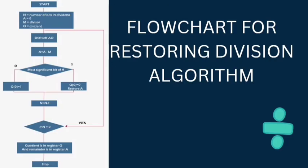My name is Manas, I am from batch S7 and my roll number is 38, and I am going to explain the flowchart of the restoring division algorithm. We assign the accumulator A with 0, we assign M with the divisor, we assign Q with the dividend, and we store the count in N. Then in the next step, the contents of A and Q are shifted to the left one by one. Then we perform a subtraction in the accumulator with the contents of M.